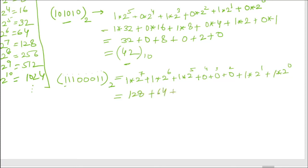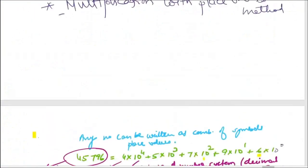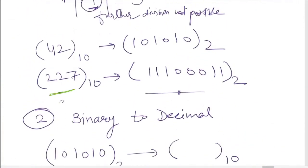Solving: 128 + 64 + 32 + 0 + 0 + 0 + 2 + 1 = 227 in decimal. We can confirm that 227 was originally converted to 11100011, and converting back gives us 227.